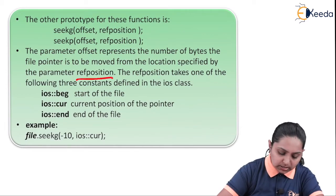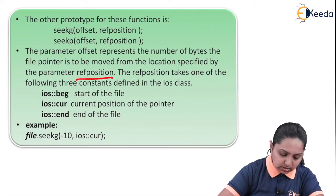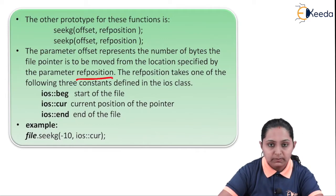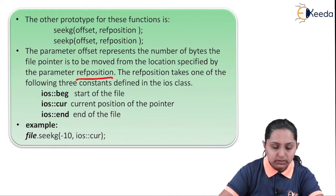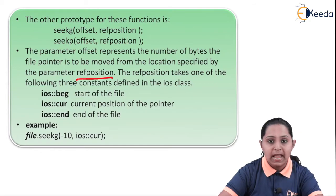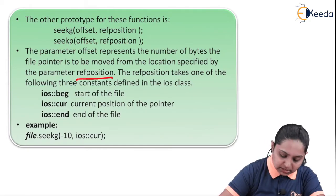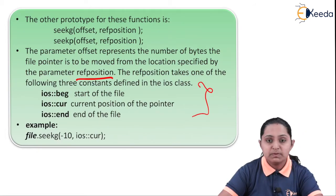The reference position takes one of the following three constant values. First is ios::beg, which is the start of the file. Second is ios::cur, which is the current position of the pointer. Third is ios::end, which takes the end of the file. With these three different modes, we can give the reference position of a particular file.